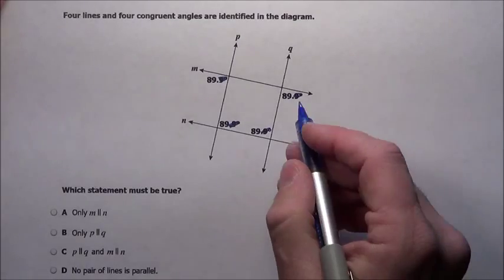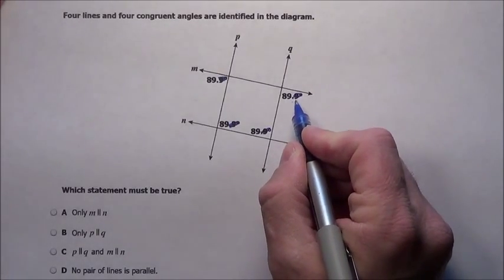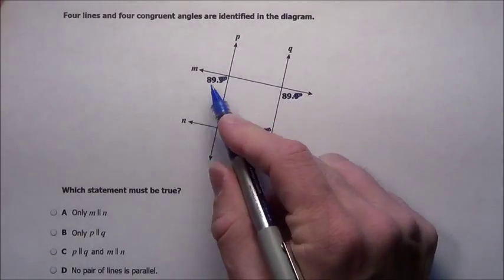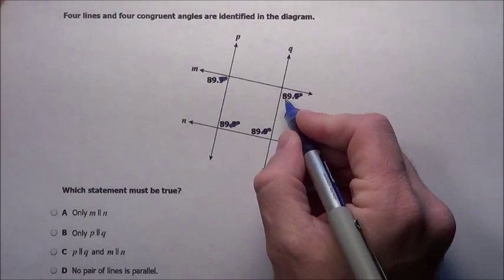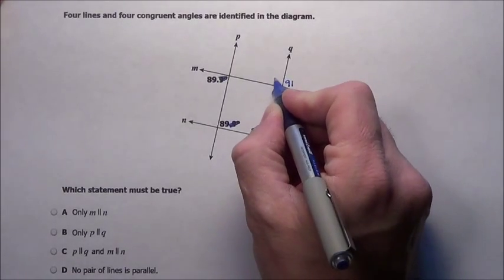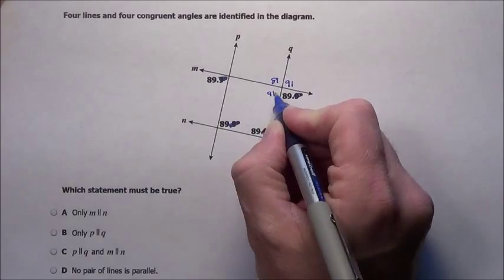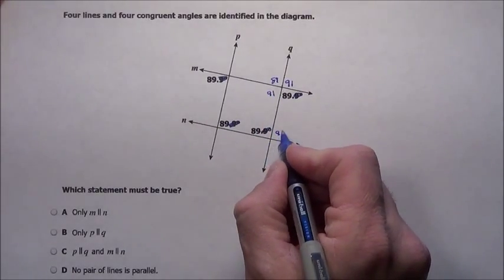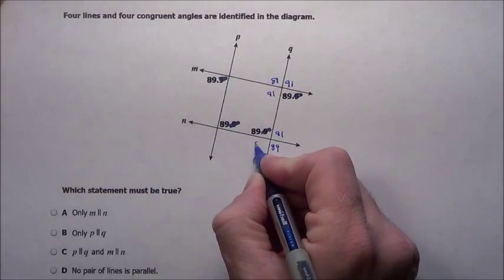But let's fill in everything figured out. Now I just made it, instead of doing the .9, I just made it 89. So they're all still congruent, no big deal. So if that's 89, we got 91 here, 89 here, 91 here. 89, 91, 89, 91.